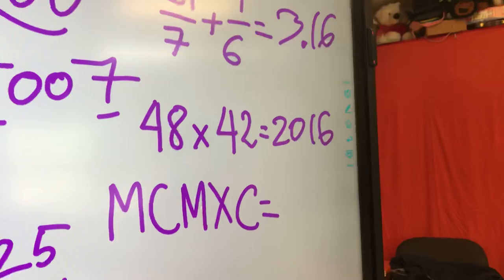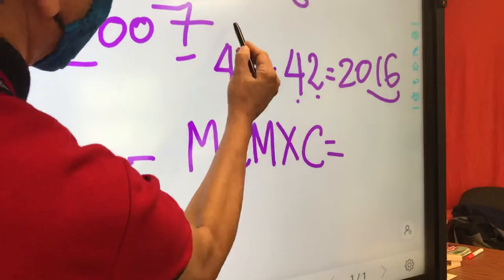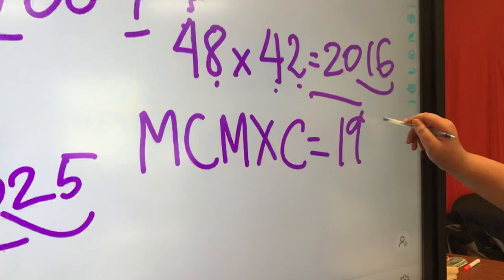And what about this one? 48 times 42. 2,016. Yes, that's another trick. 2 times 8 is 16, and 4 times one more here. 4 times 5 is 20. Good job.